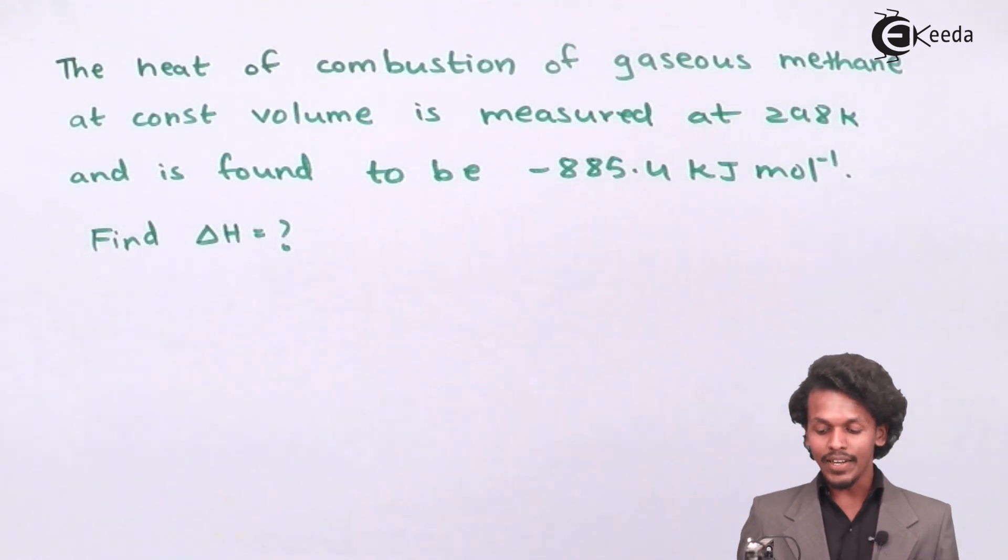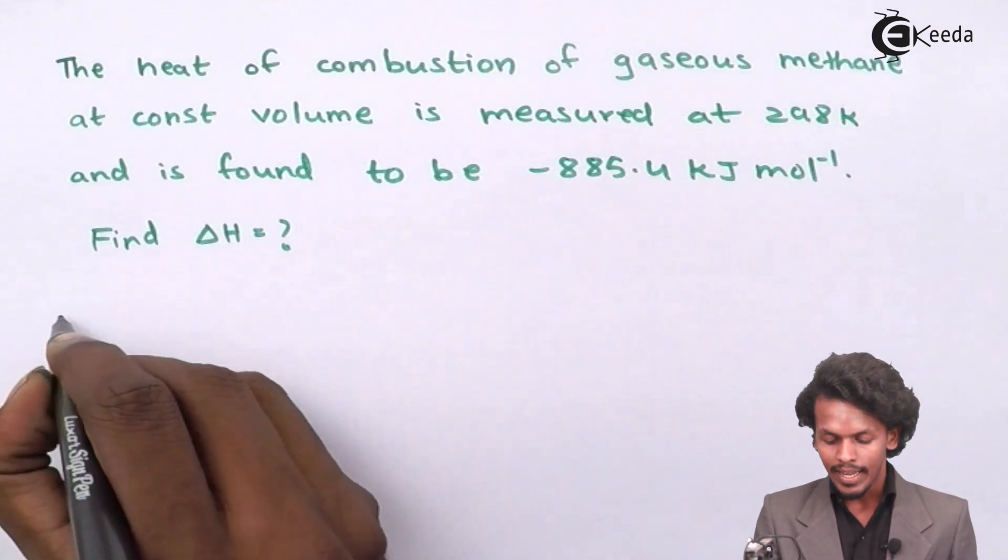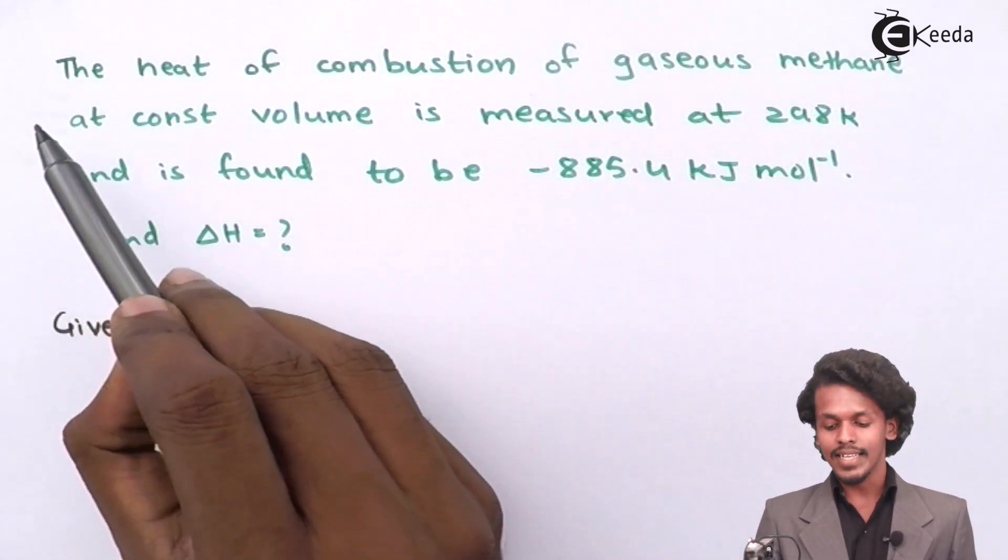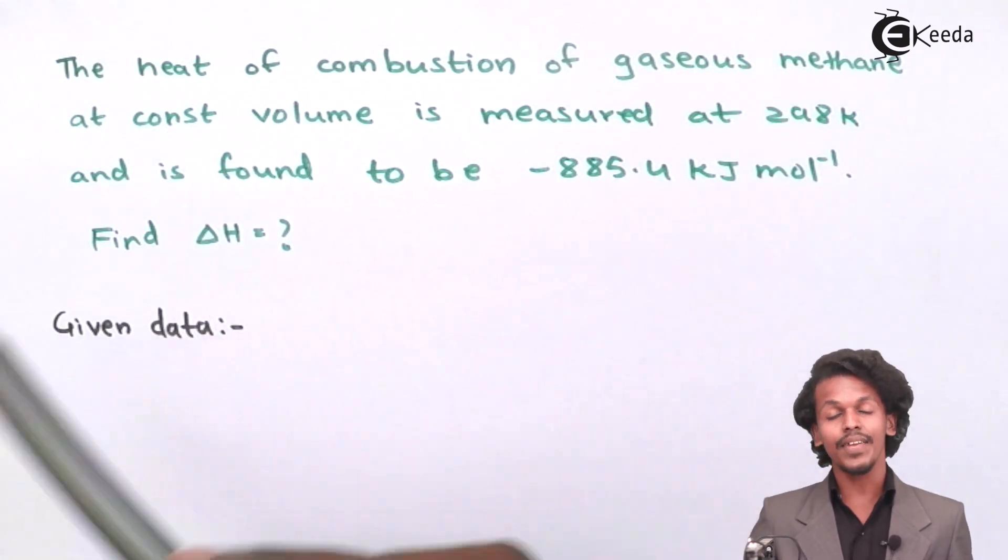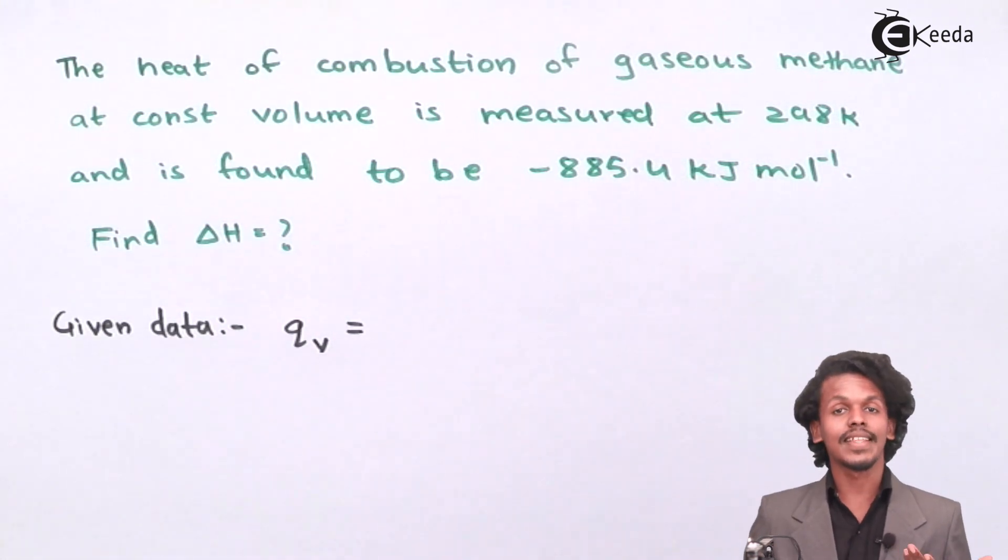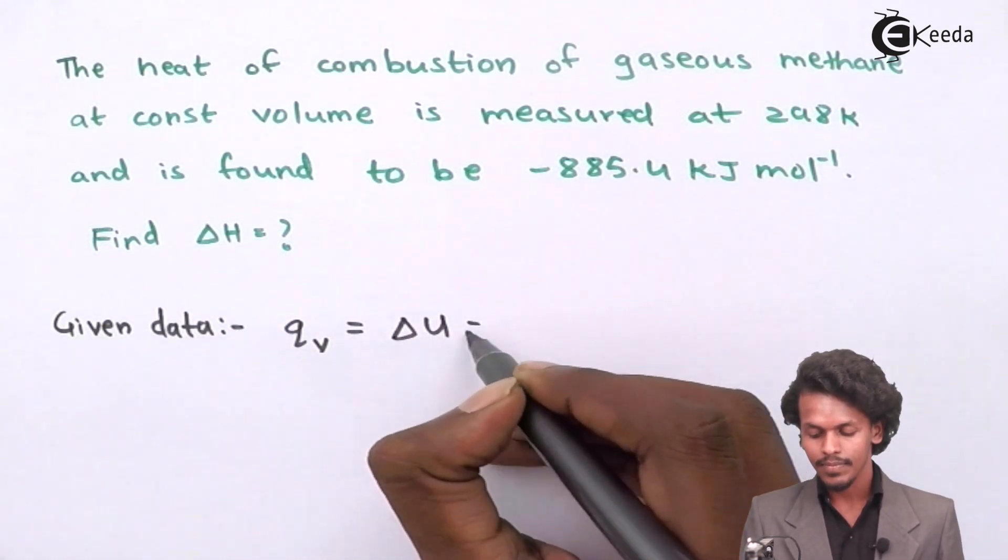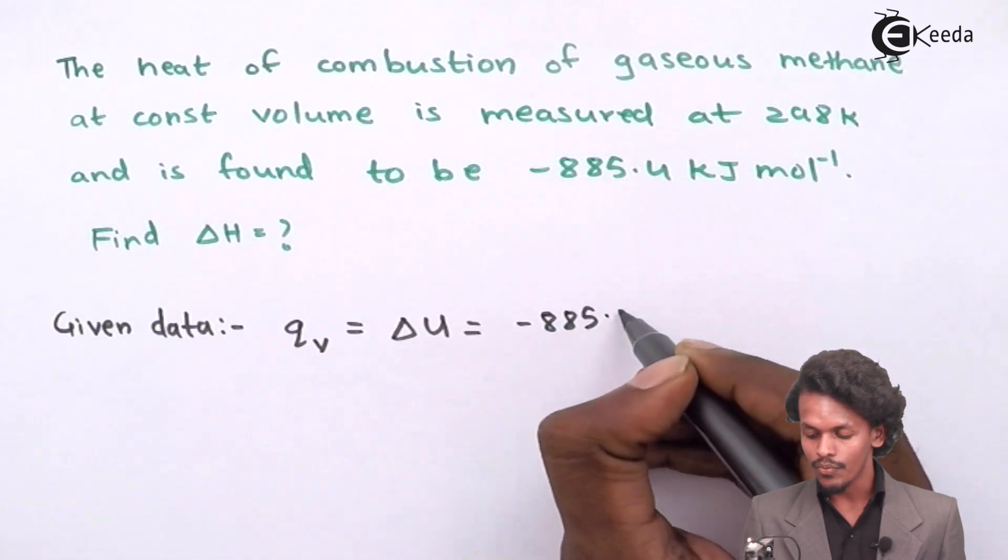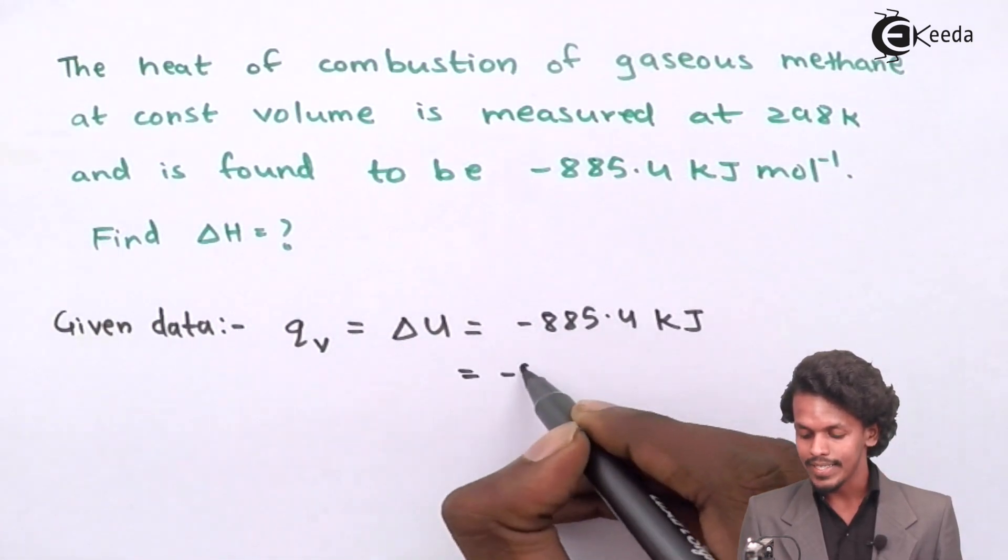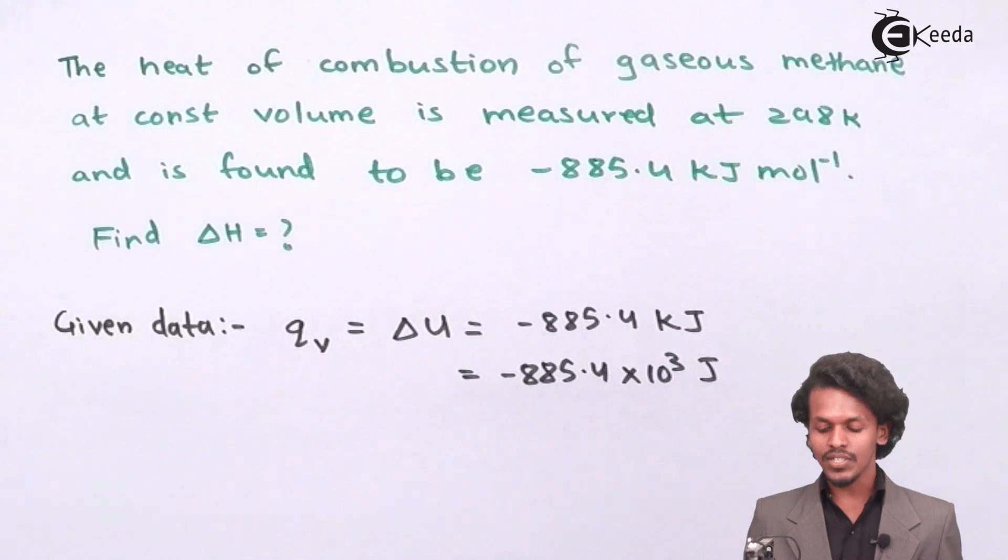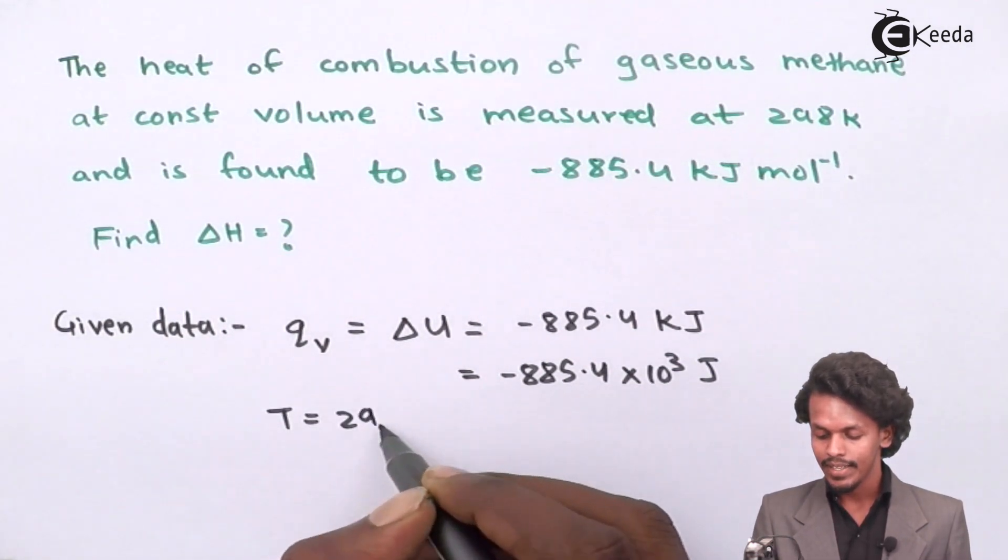First of all, we should know how to extract the data from the given question. The given data states the heat of combustion of gaseous methane at constant volume, which means they are providing QV. But QV is nothing but delta U itself, the change in internal energy, which is found to be minus 885.4 kilojoules, or minus 885.4 times 10 to the power 3 joules. The temperature given is 298 Kelvin.